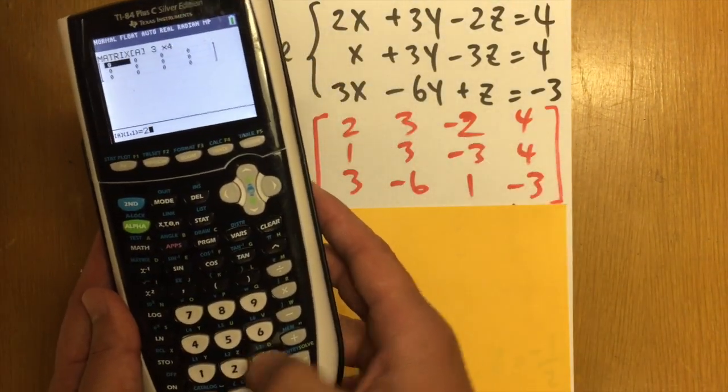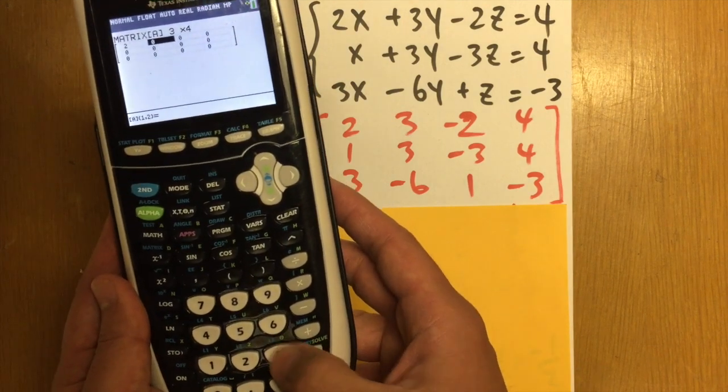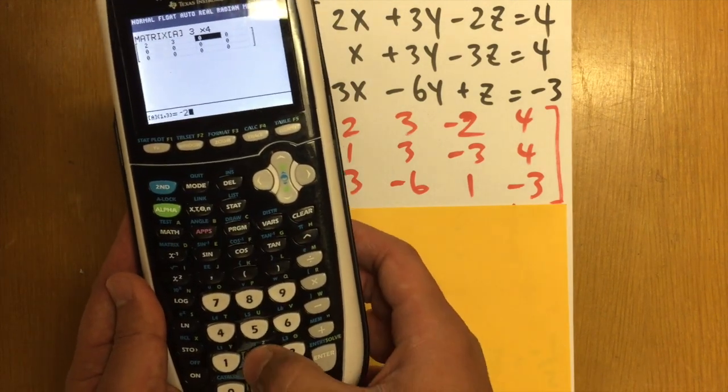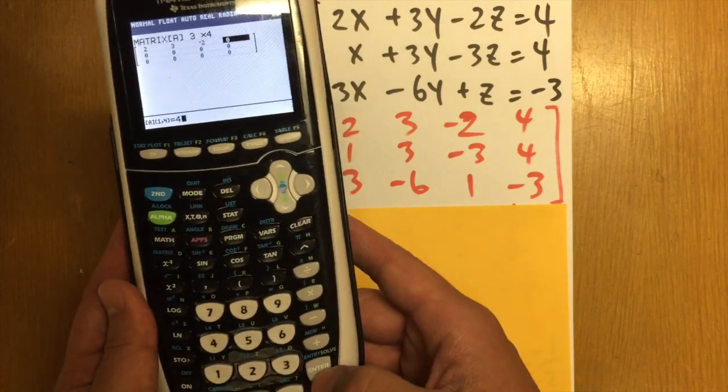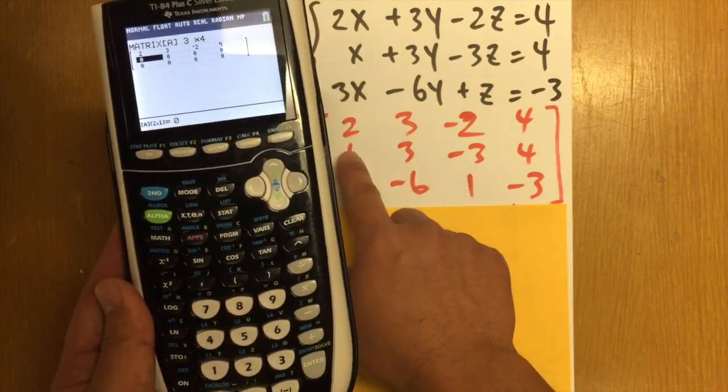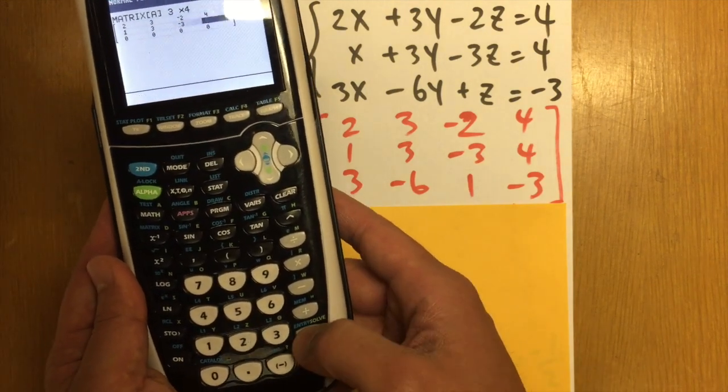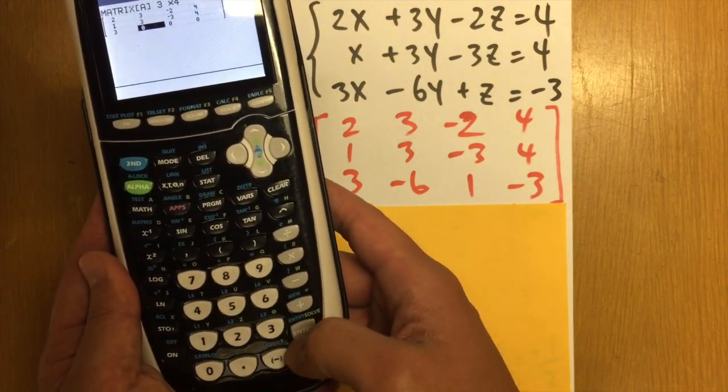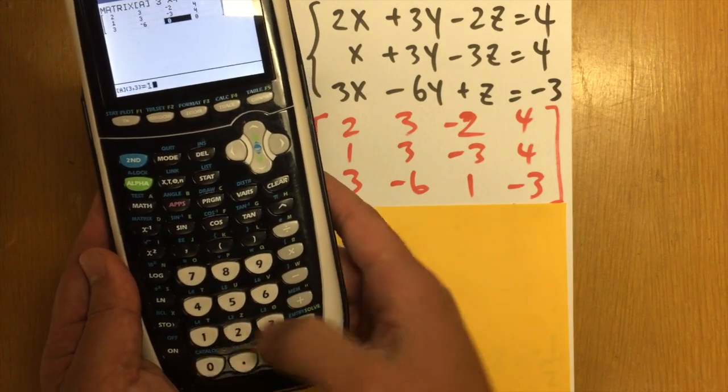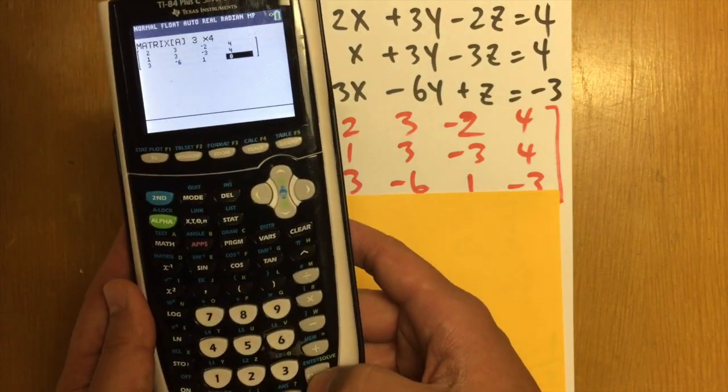So I'm going to put down 2, 3, and use this for negative, negative 2, and then we have 4. And then we're just going to continue. We have the 1, 3, negative 3, and 4. And then 3, negative 6, 1, and negative 3.